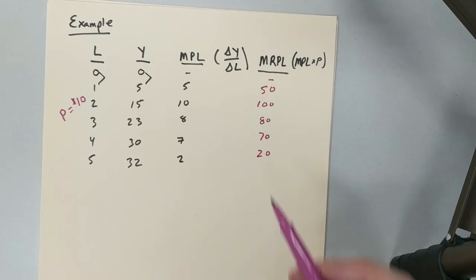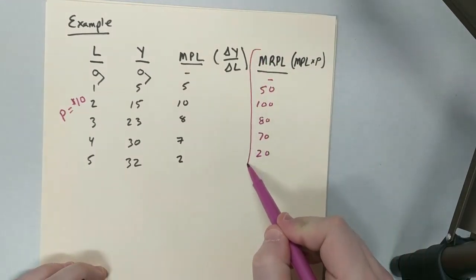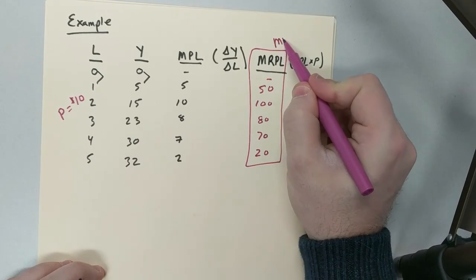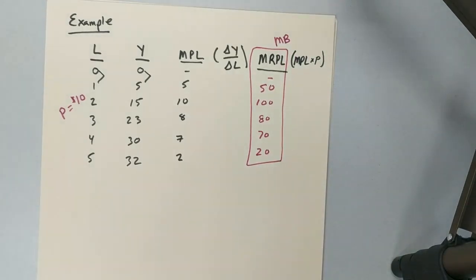This right here is that marginal benefit. And so that's a very simple way about how we can calculate MRPL using a table.